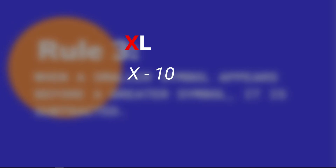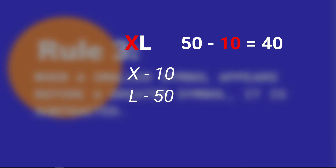For XL, X means 10 and L means 50. Since 10 comes before 50, we do 50 minus 10, which equals 40.